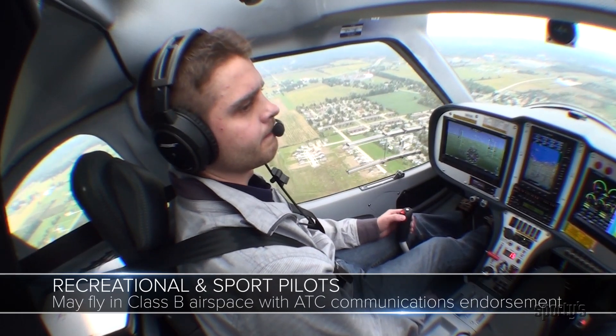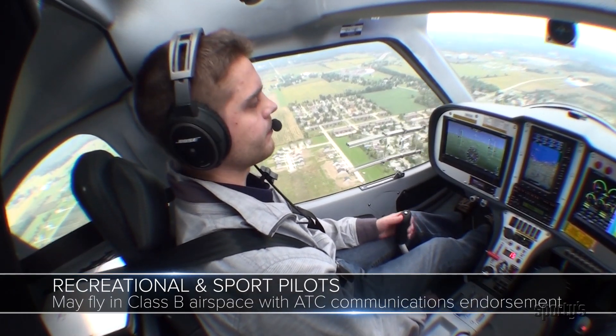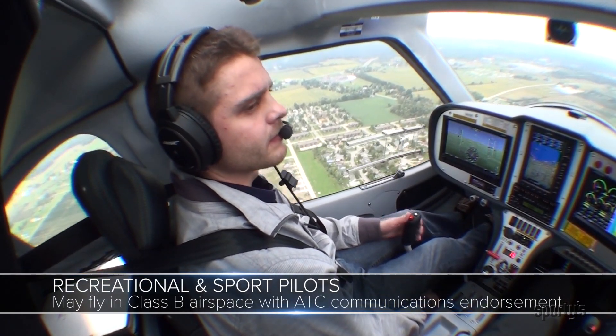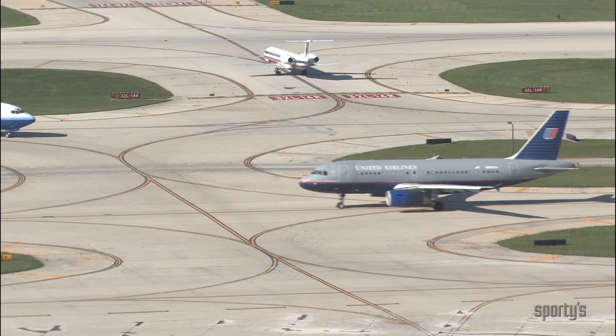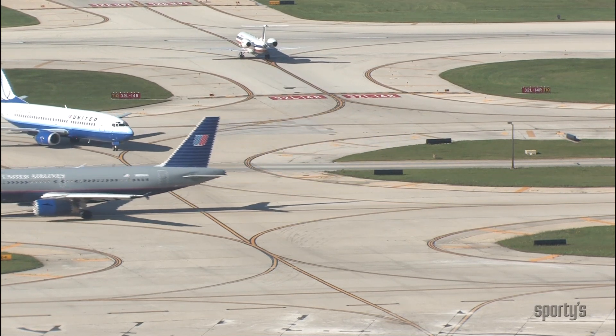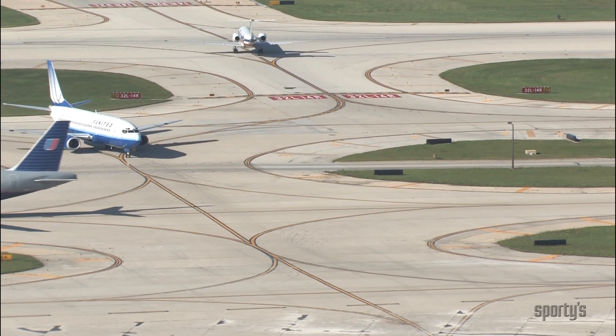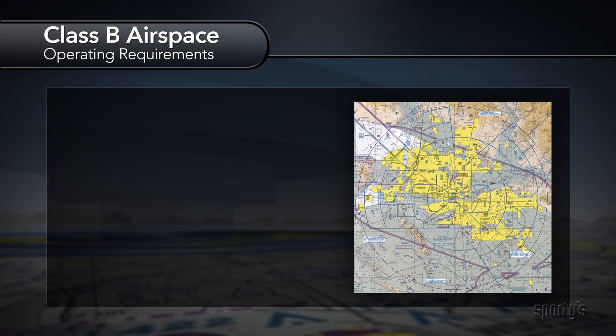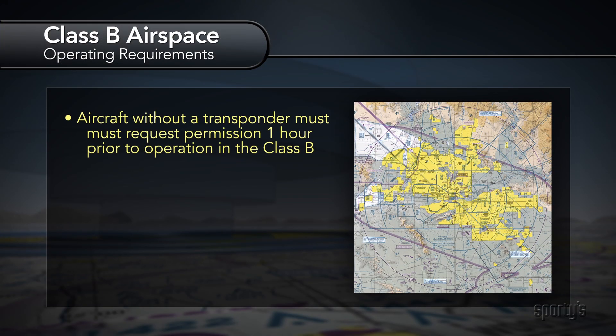Recreational pilots may fly in Class B airspace after receiving an endorsement for ATC communication. At the busier Class B areas such as Chicago and Los Angeles, student pilots may not take off or land at the primary airport. An aircraft without a transponder may operate in Class B if the request for the deviation is made to ATC at least one hour prior to the proposed operation.